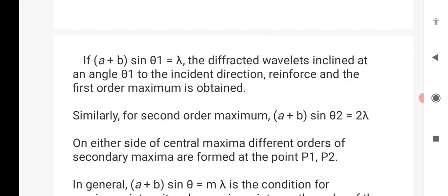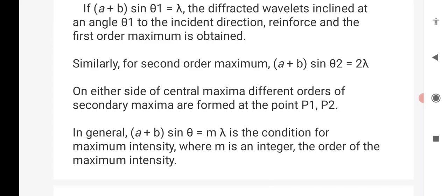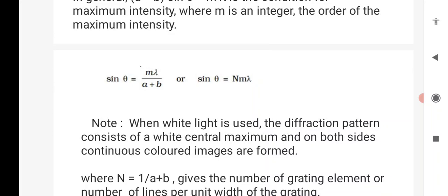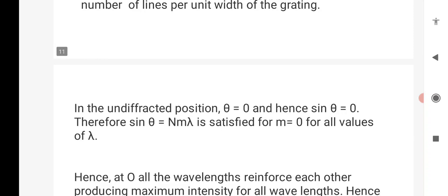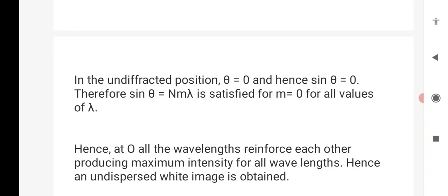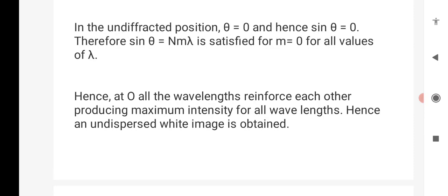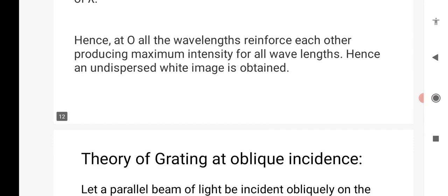In general, the condition for maximum intensity is A plus B sin theta equals M lambda. We can express this as sin theta equals M lambda divided by A plus B, or sin theta equals capital N M lambda, where capital N equals 1 by A plus B, which gives the number of grating elements or number of lines per width of the grating. If theta equals 0, then M equals 0, which means all the wavelengths reinforce with each other producing maximum intensity for all wavelengths.